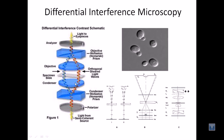What differs in this microscopy is found in the component system. If you look at the light path of this DIC microscope, we can find the normal light source at the beginning.